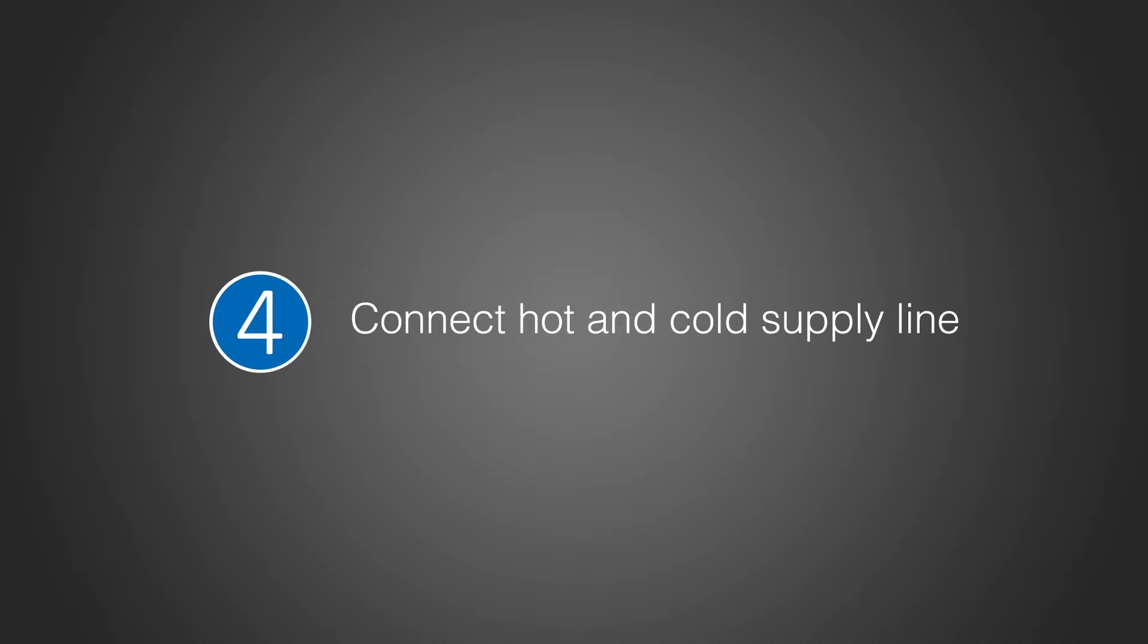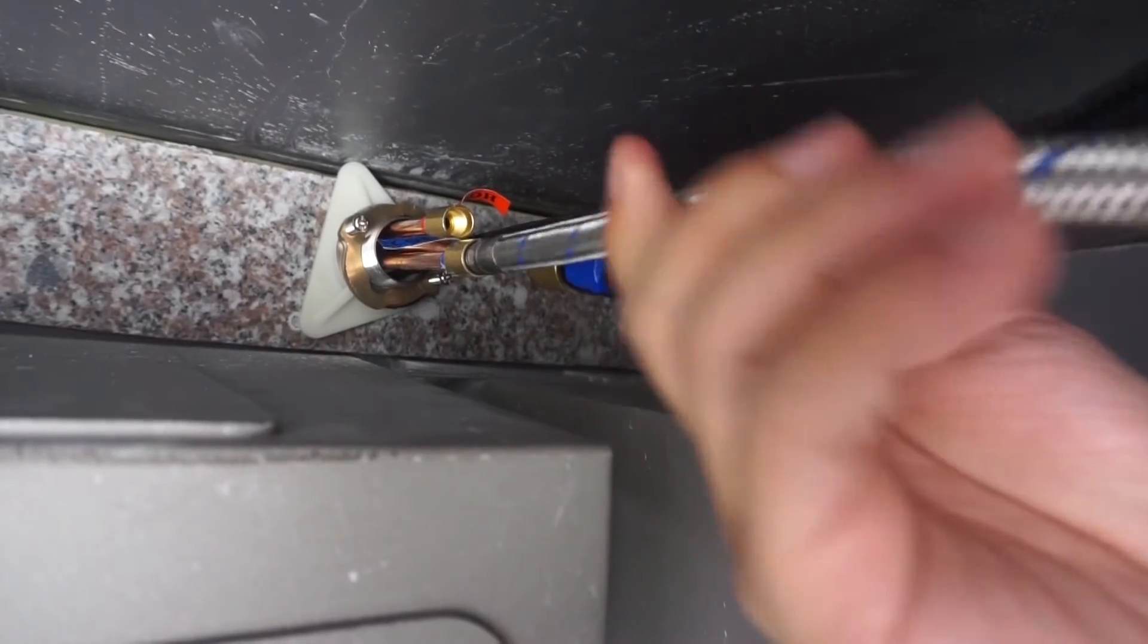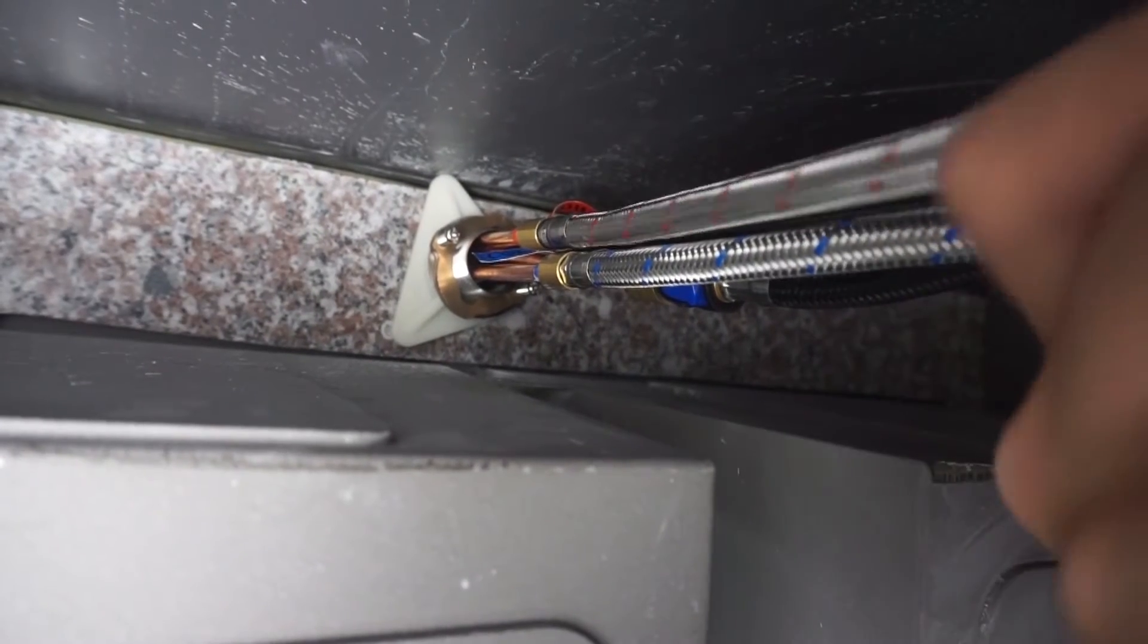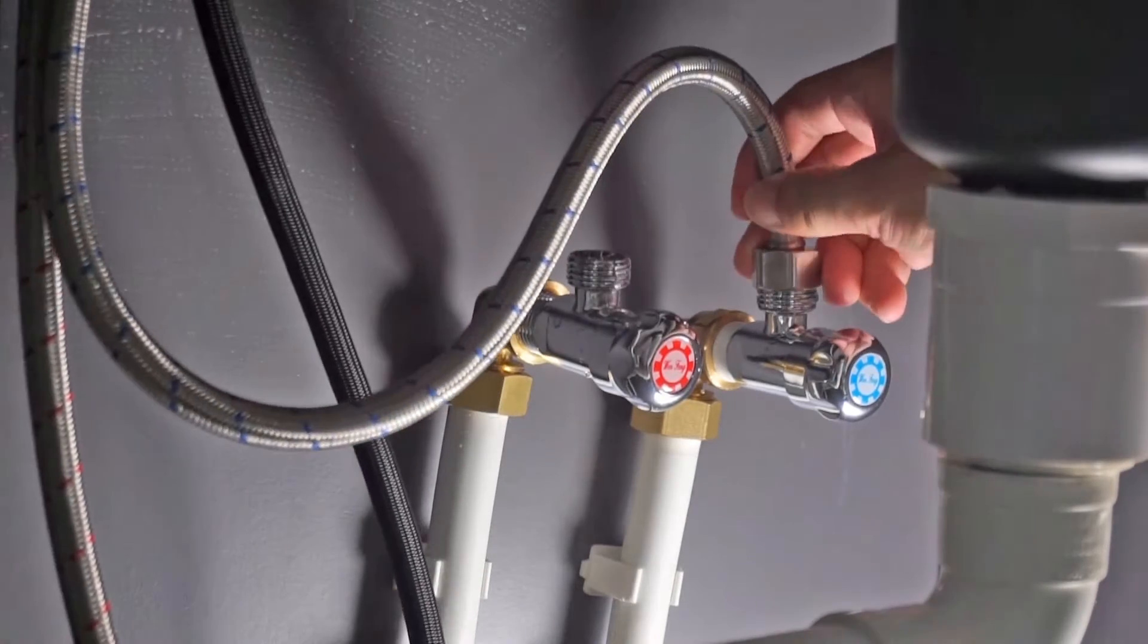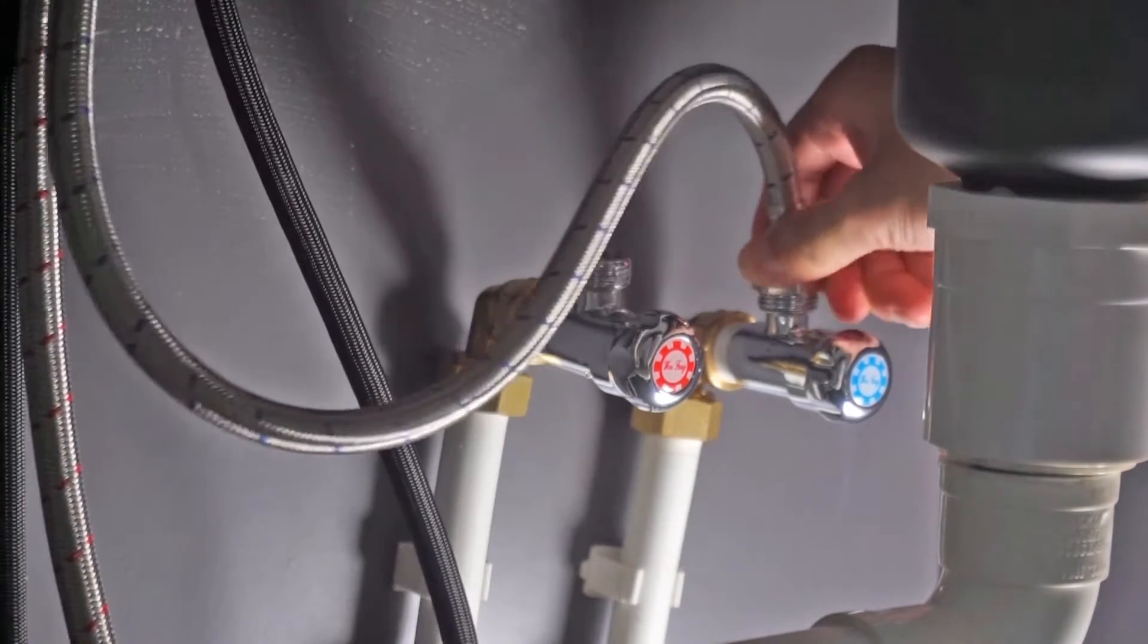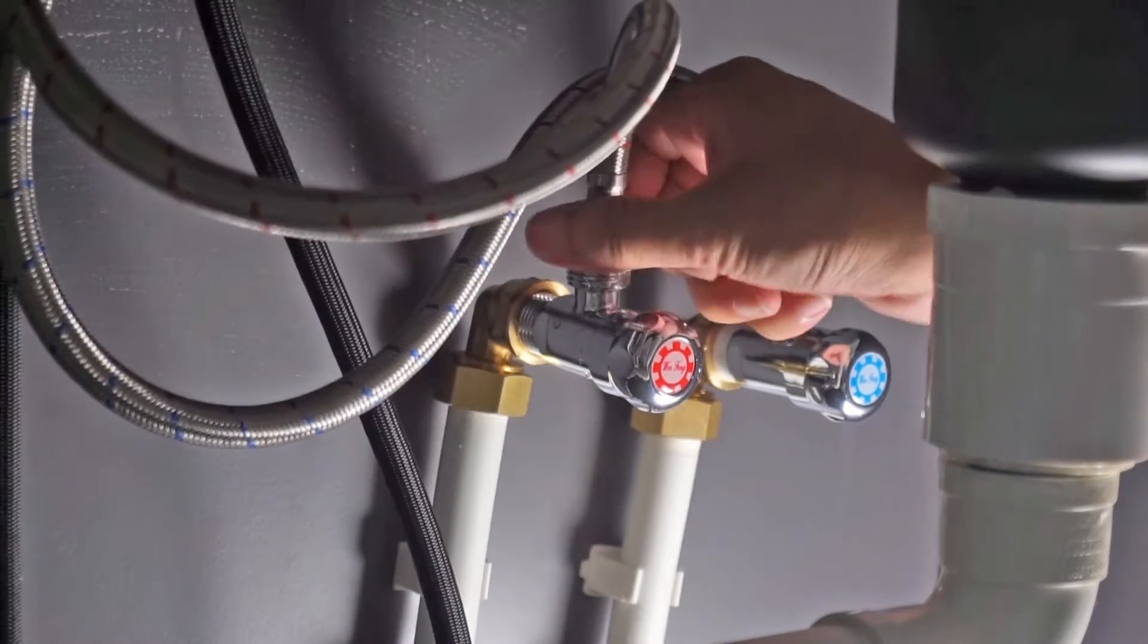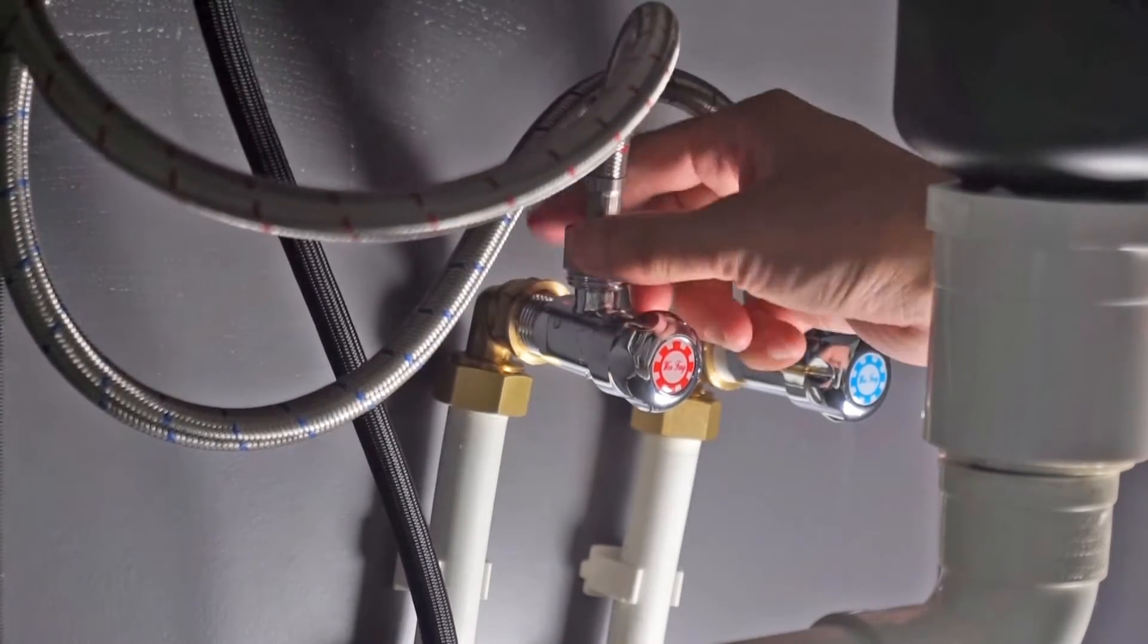Connect the hot and cold supply lines: Screw and tighten the hot and cold flexible lines to the corresponding faucet connectors. Attach flexible hose to the water supply using adjustable wrench. Ensure that it is tightened.